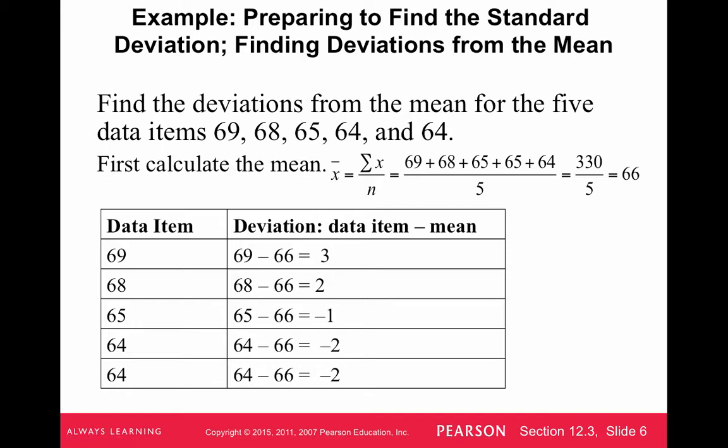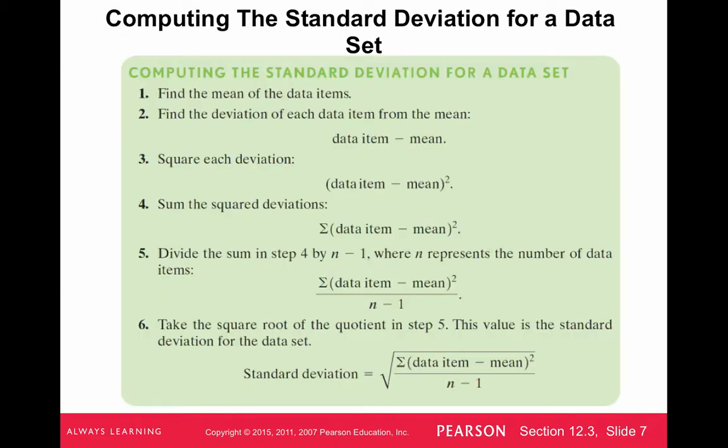And you'll see that when we add the deviations, three plus two is five, and negative one plus negative two plus negative two is negative five. The positive deviations and the negative deviations always cancel, and the sum of the deviations is always zero. So that's a little bit of a problem for the standard deviation, and we'll see that when we compute it in the formula.